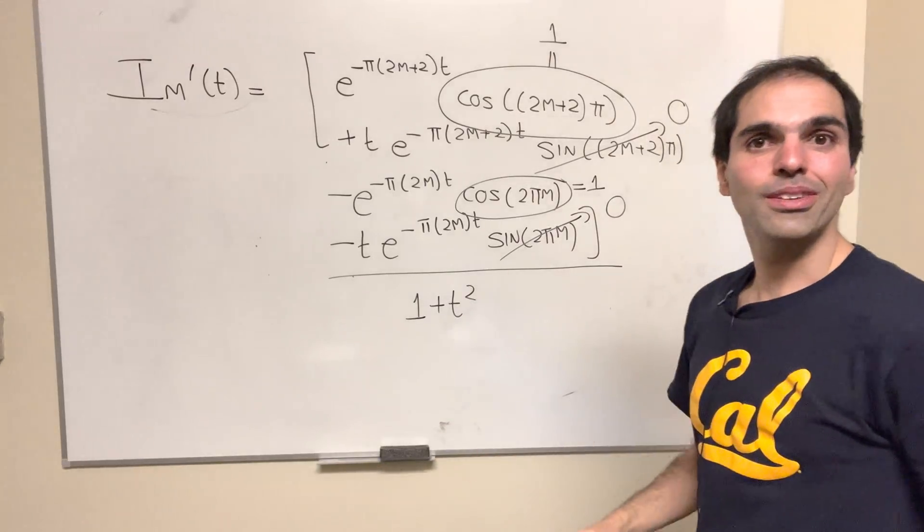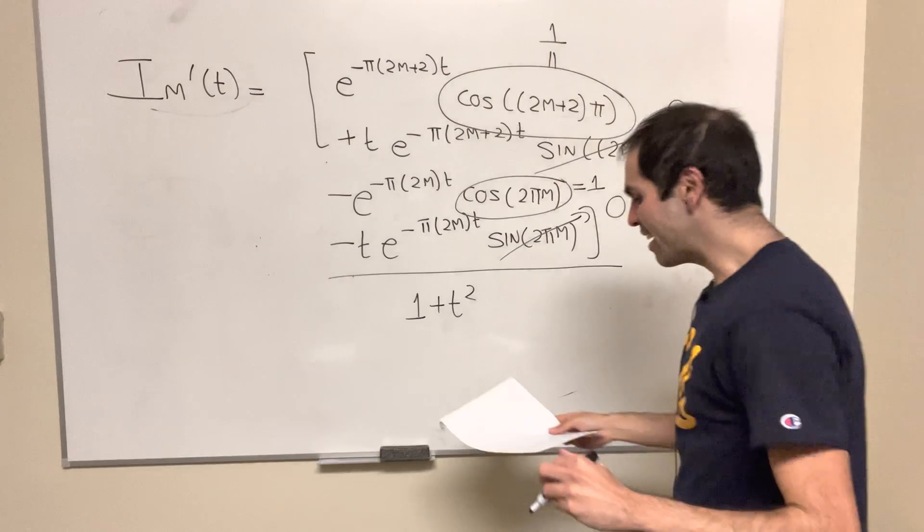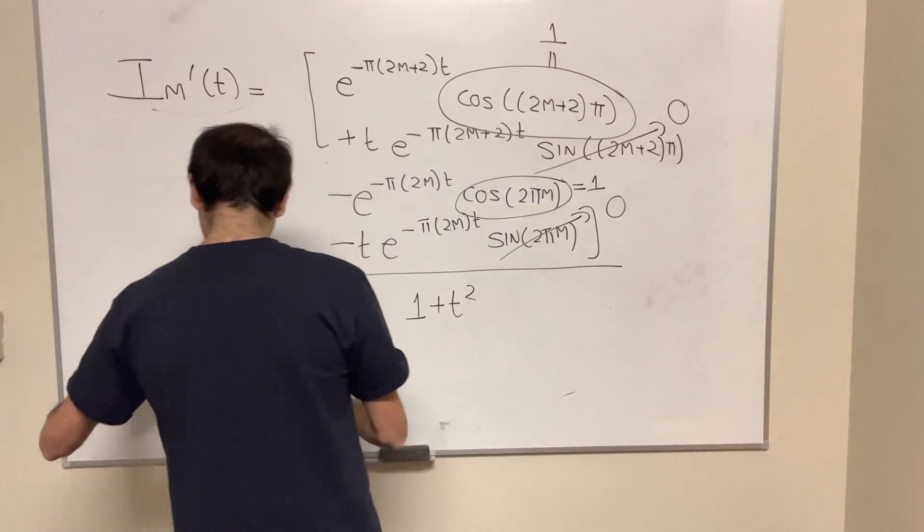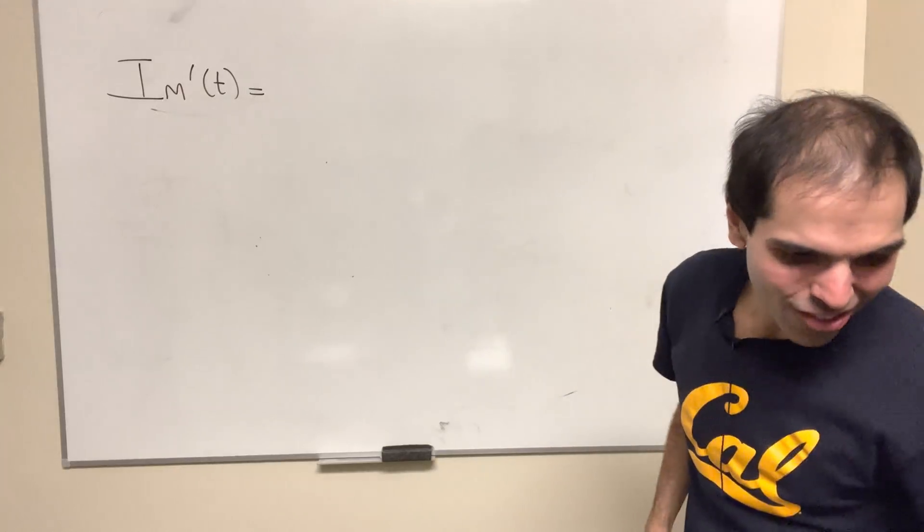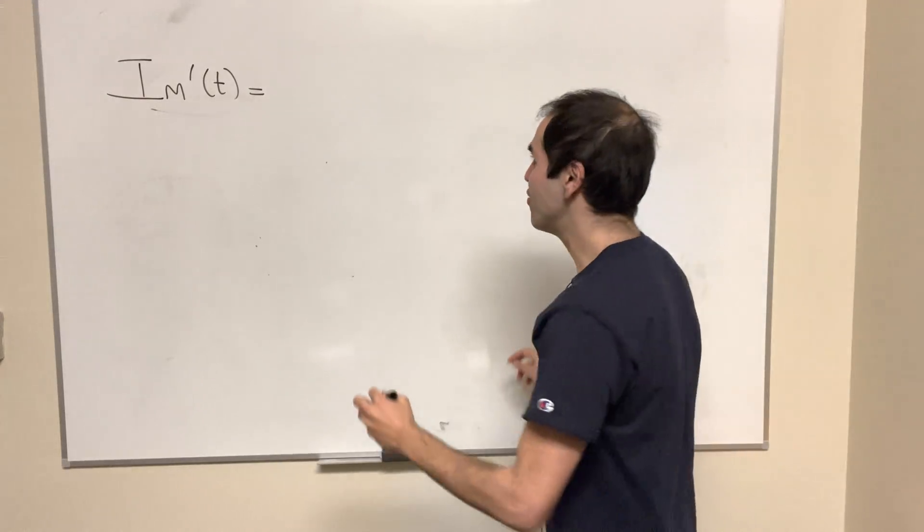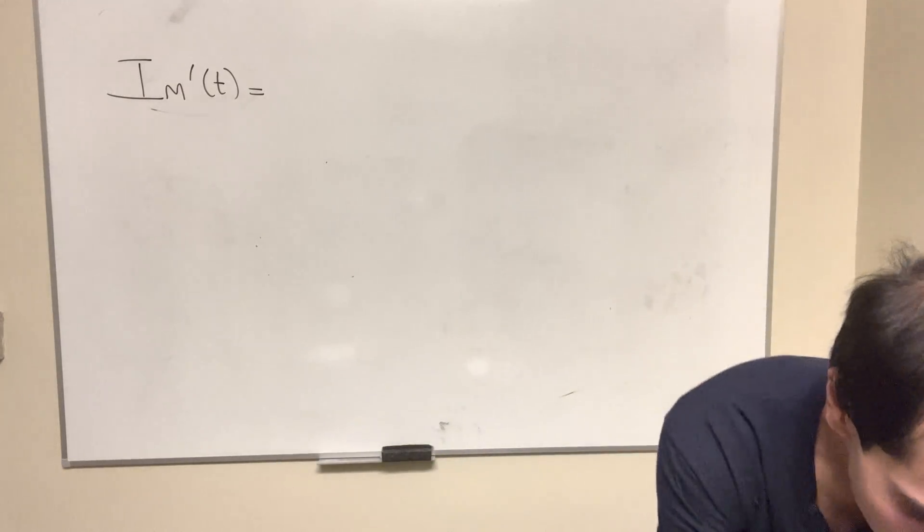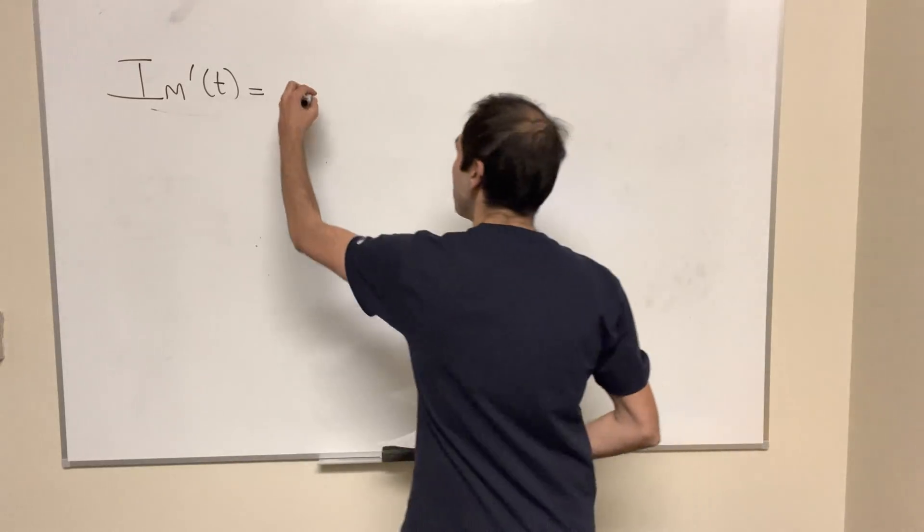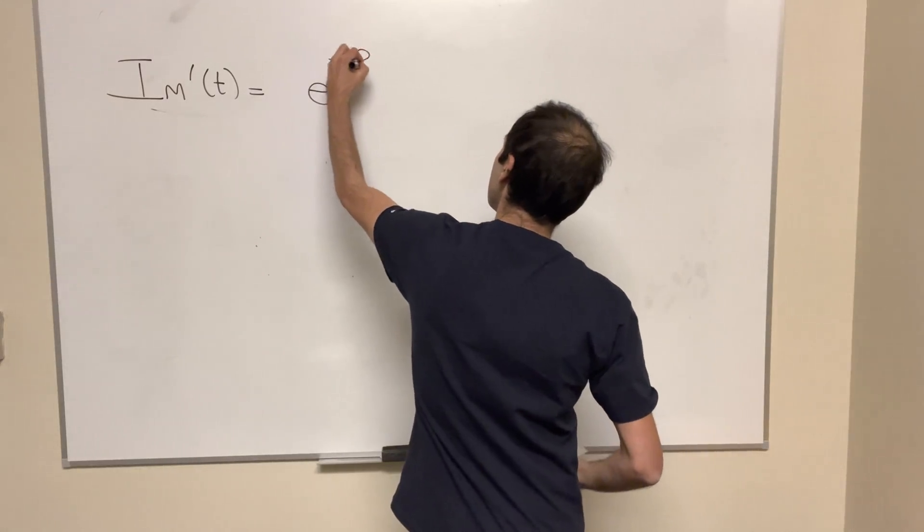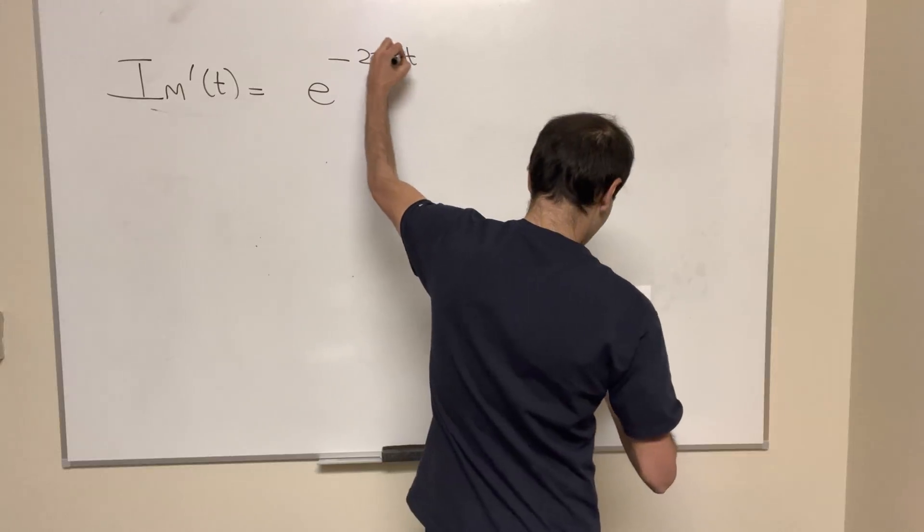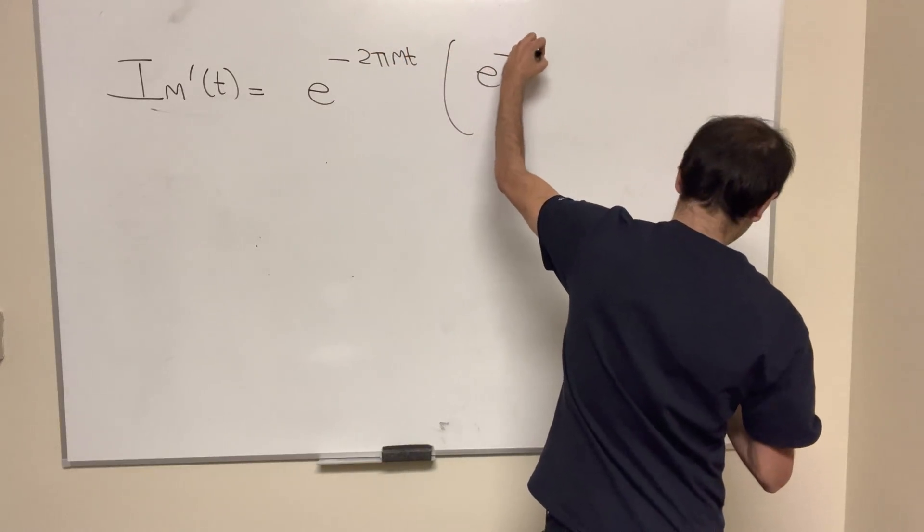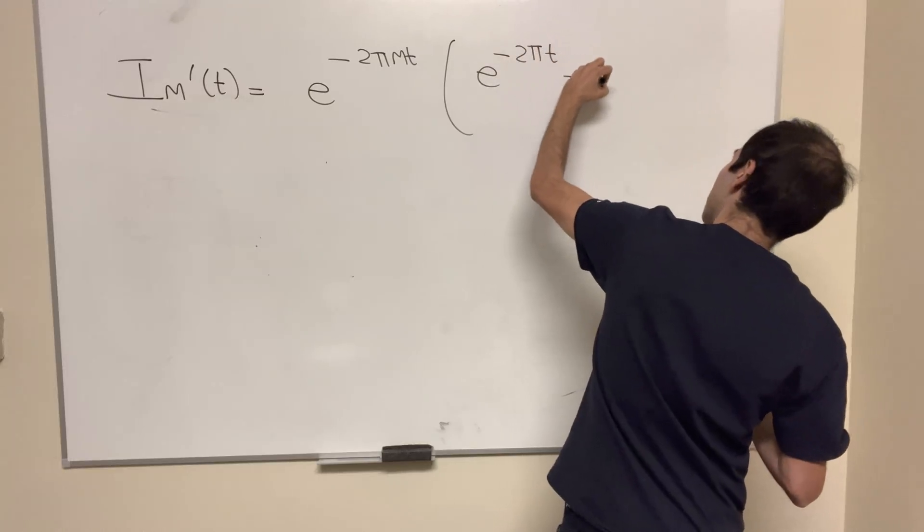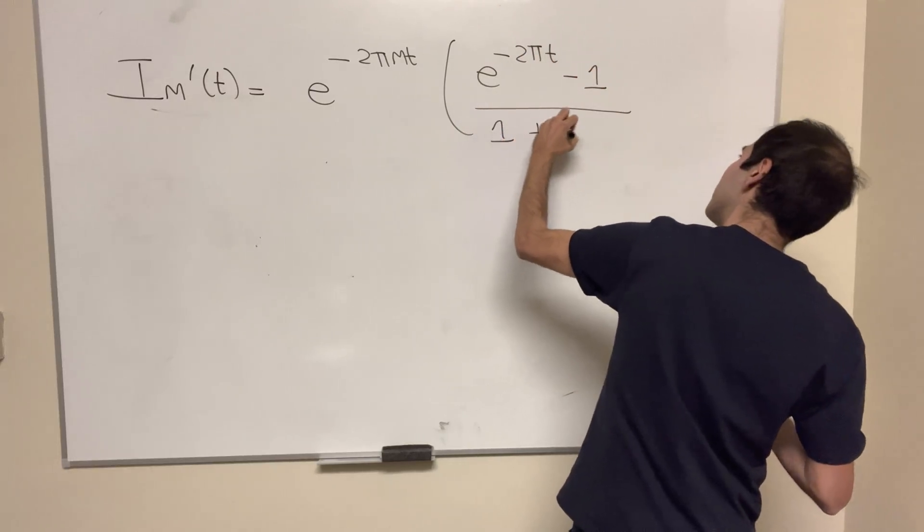So really, after the dust settles, we do get the following nicer formula. Summa summarum, we end up getting the following. So the derivative of i_m is just e^(-2πmt) times this term, so e^(-2πt) - 1 over 1 + t².